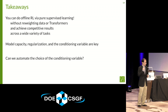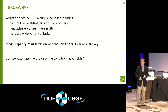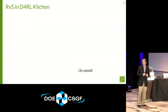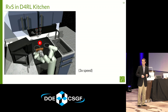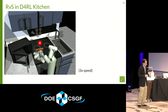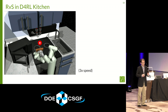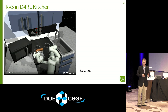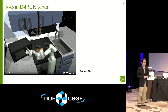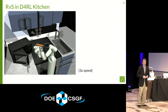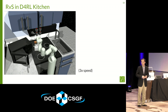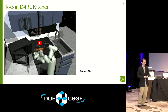The takeaways are that you can do offline reinforcement learning via pure supervised learning — without data reweighting or transformers — and achieve competitive results across a wide variety of tasks. The keys are model capacity, regularization, and the conditioning variable. An open question for future work is automating the choice of conditioning variable, rather than hand-crafting domain knowledge like xy coordinates. We want the algorithm to automatically detect useful latent structure. A closing video demonstrates the complexity of behavior learnable using a simple depth-2 neural network on offline data.